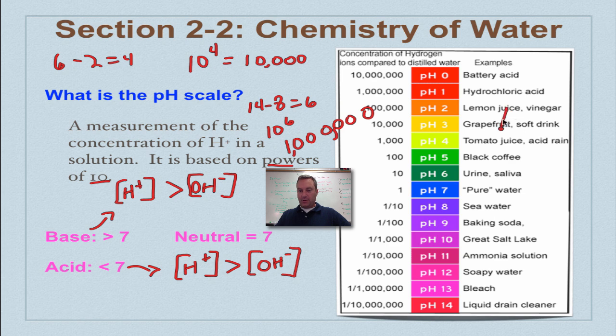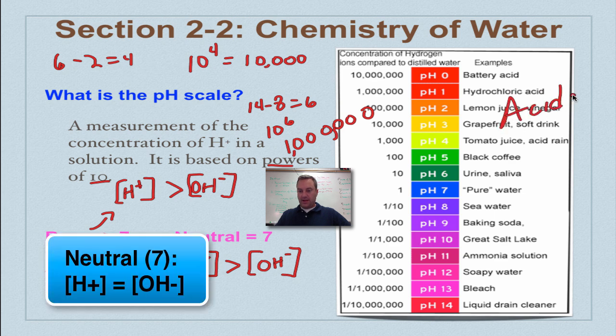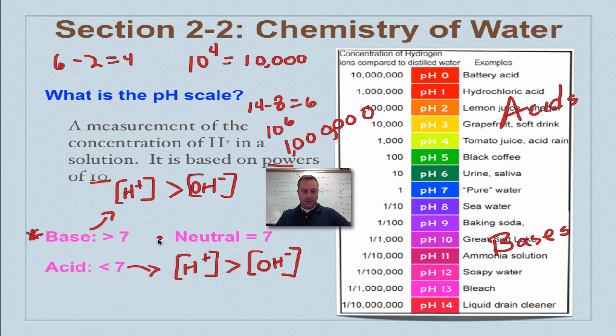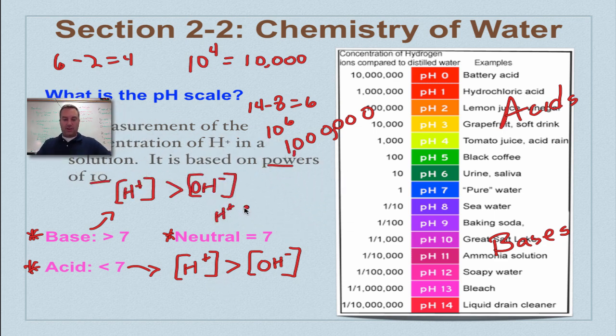Remember, these guys up here, these are the acids because it's below seven. Down here, because it's above seven, those are your bases. I want you to make sure the stuff in pink, you know, and the stuff in red that I wrote here about the amount of concentrations. Remember neutral, your concentration of H+ is equal to the concentration of your hydroxides.